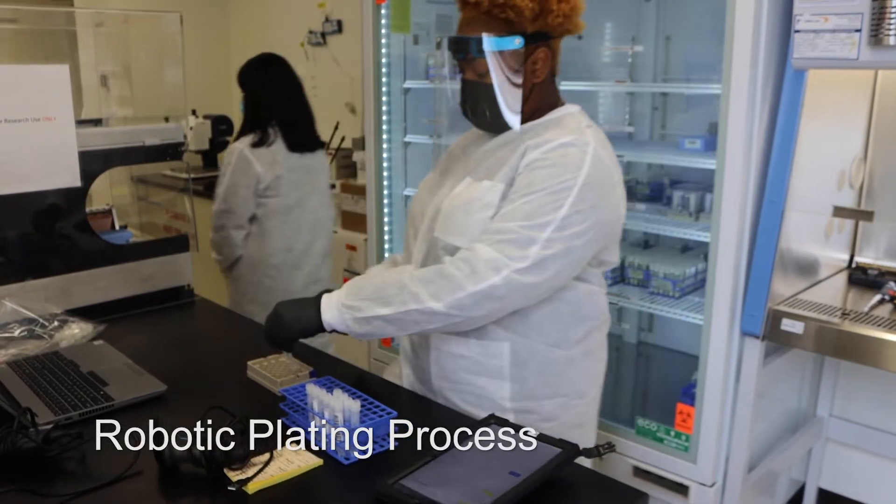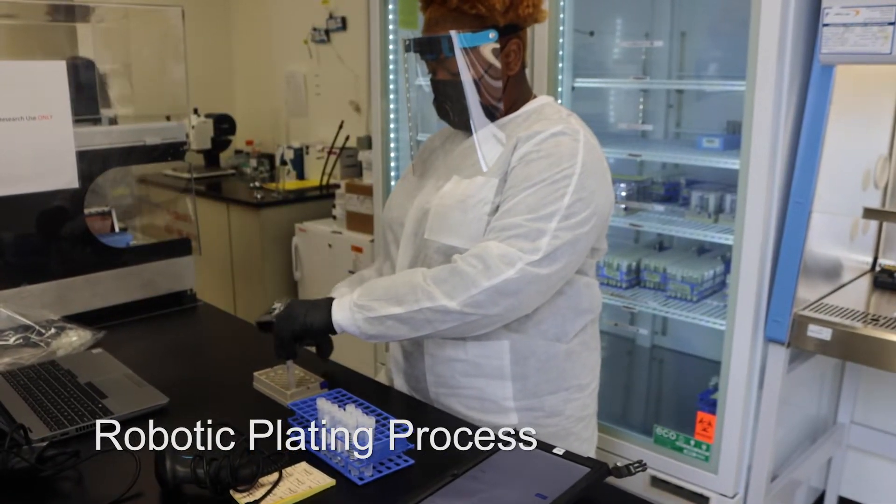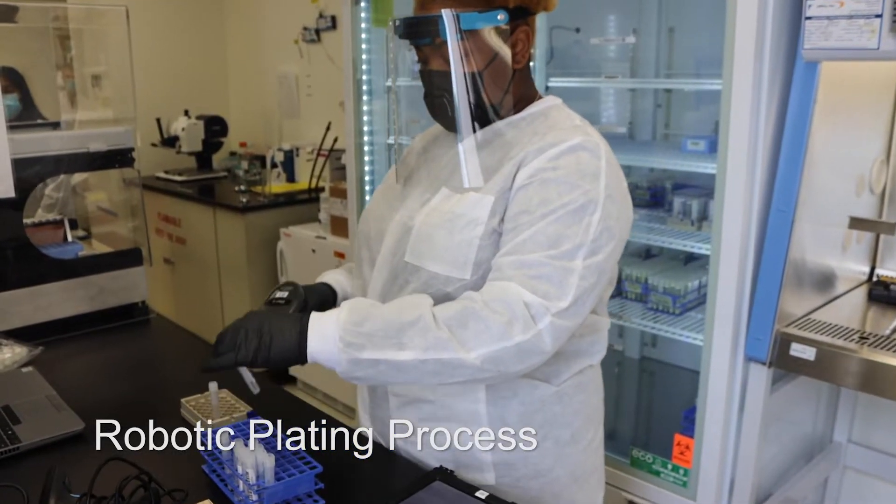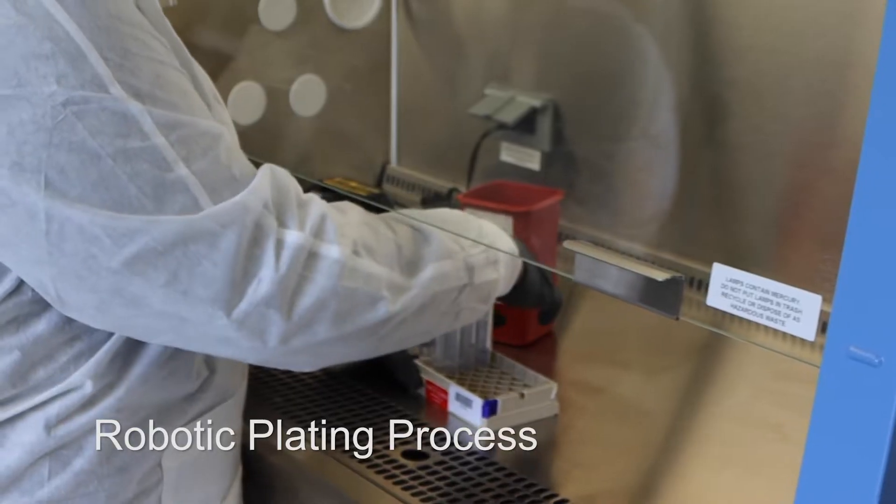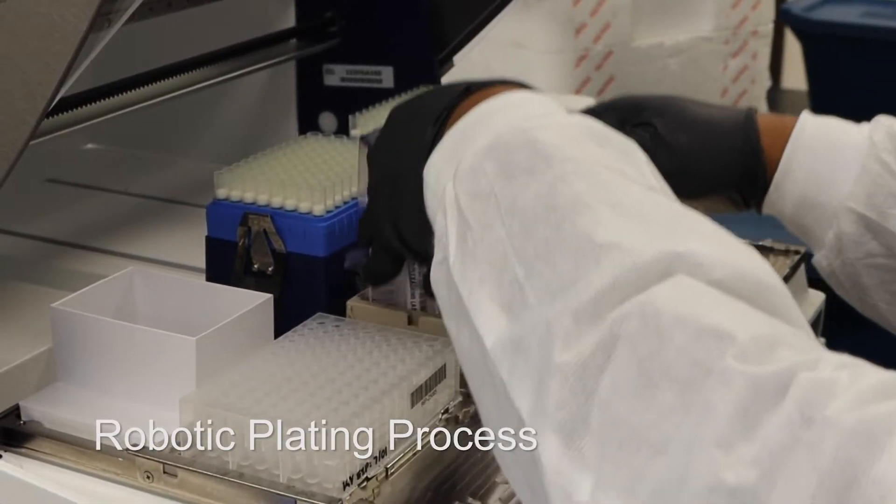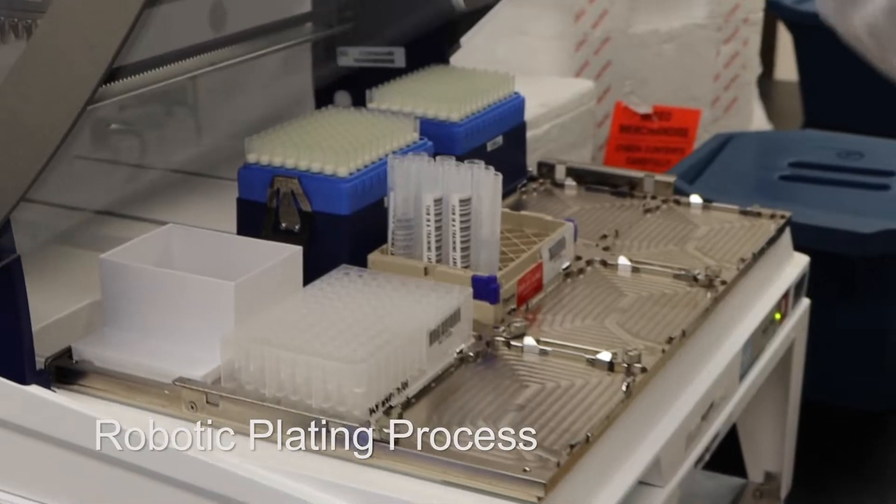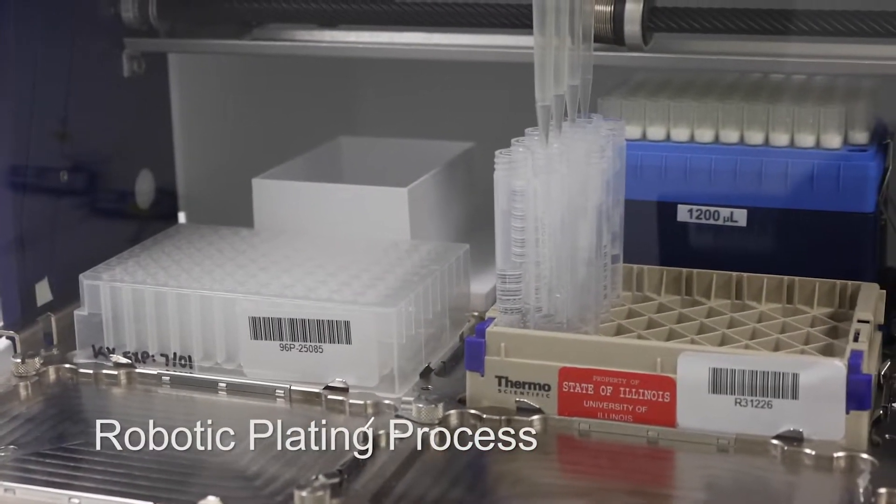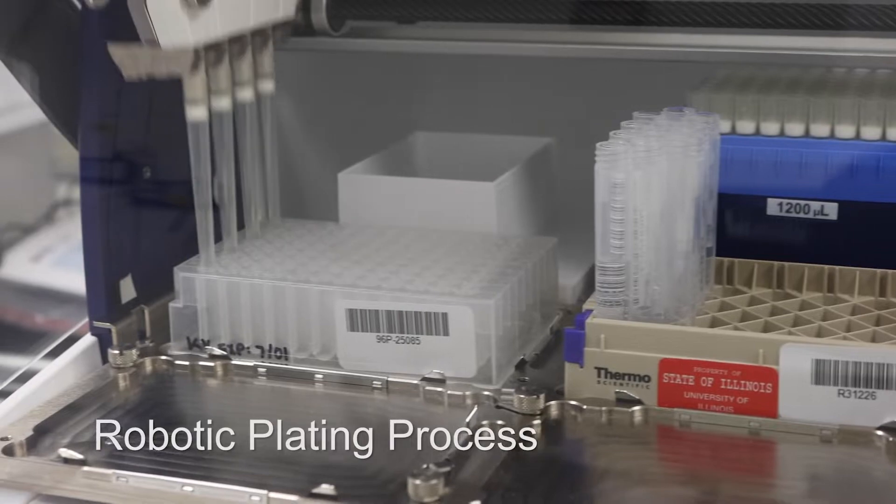For the robotic plating process, vials are scanned and placed into a matching location on a new tray. The caps are removed from the vials and the well tray is placed in the robotic transfer machine. The robot pulls samples from vials and places them in the sampling plate.